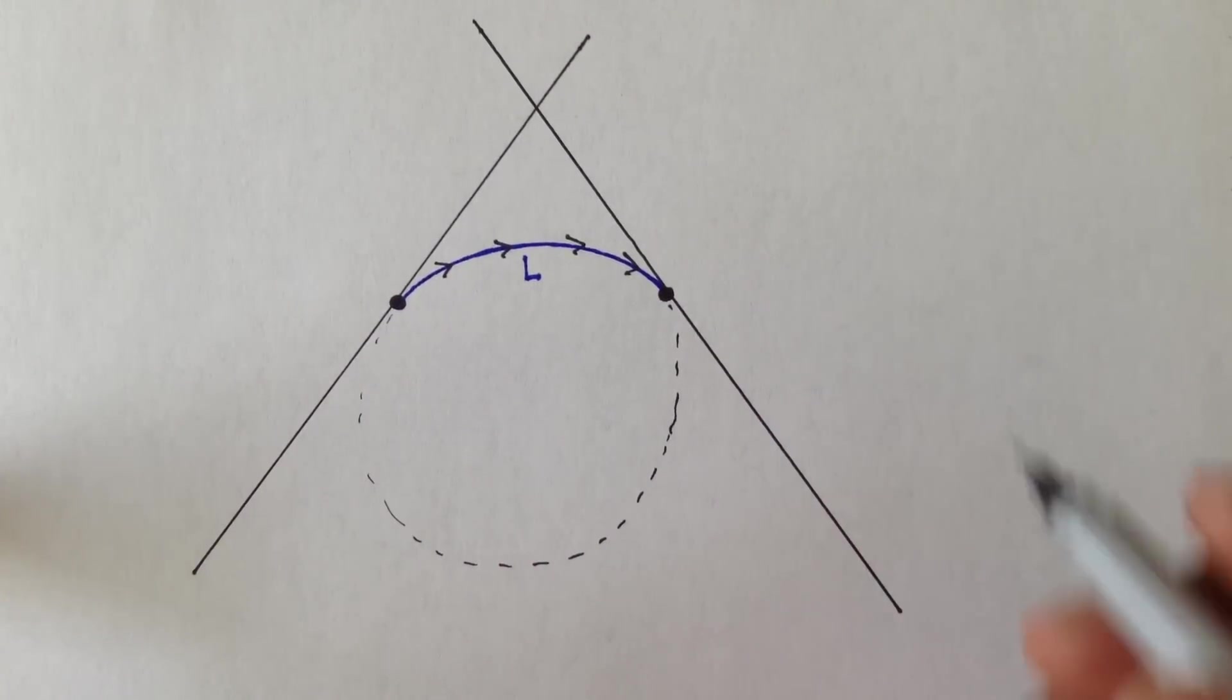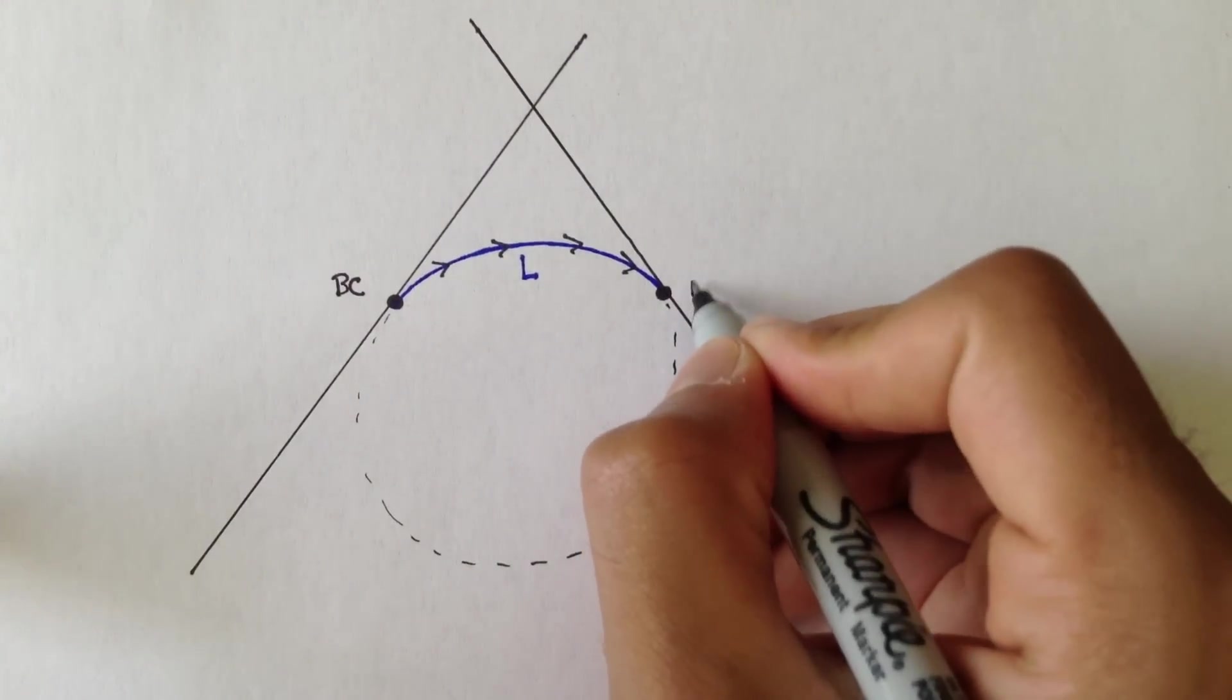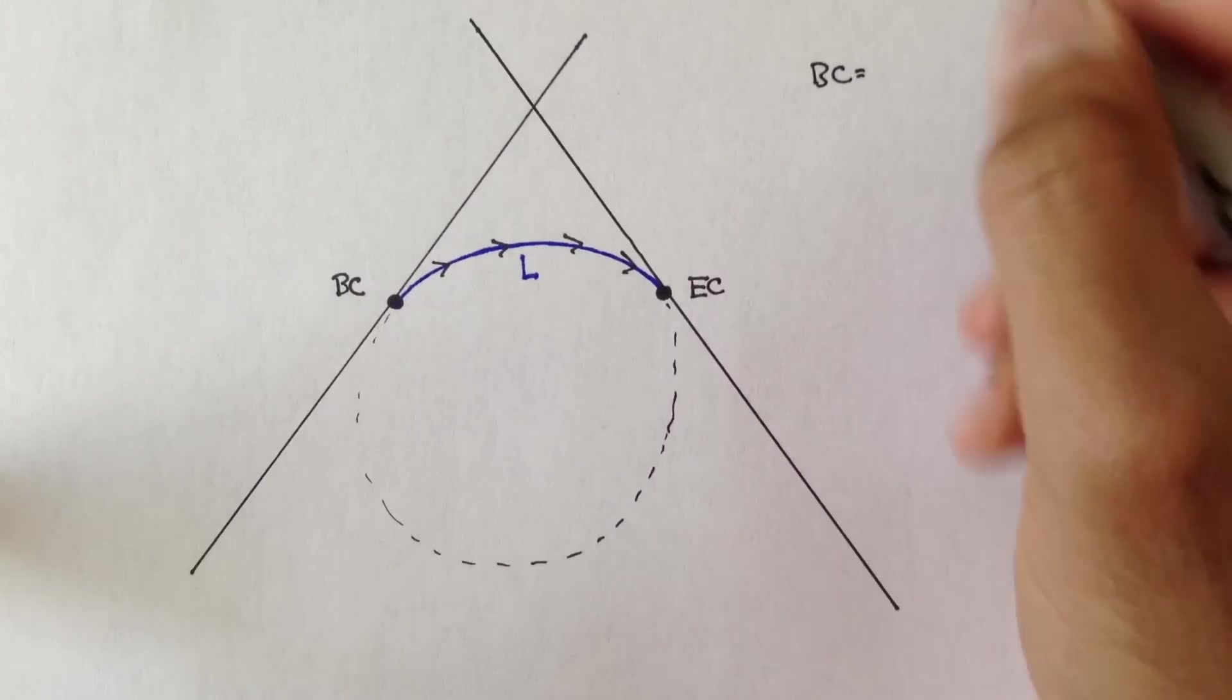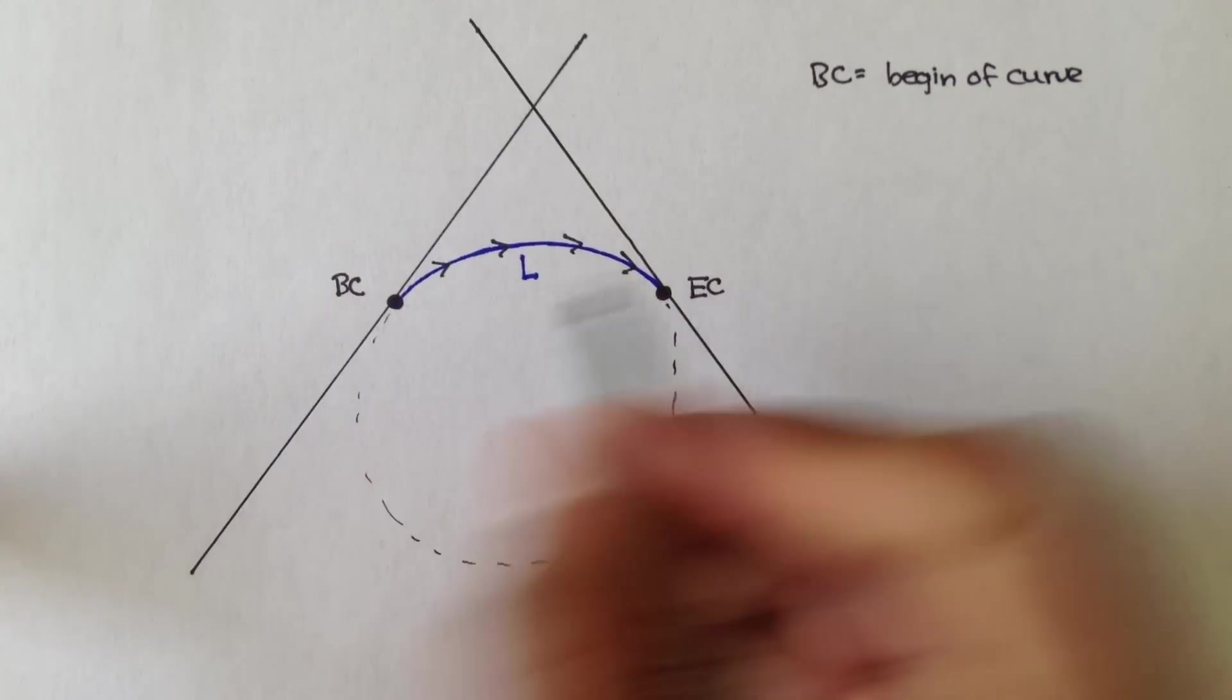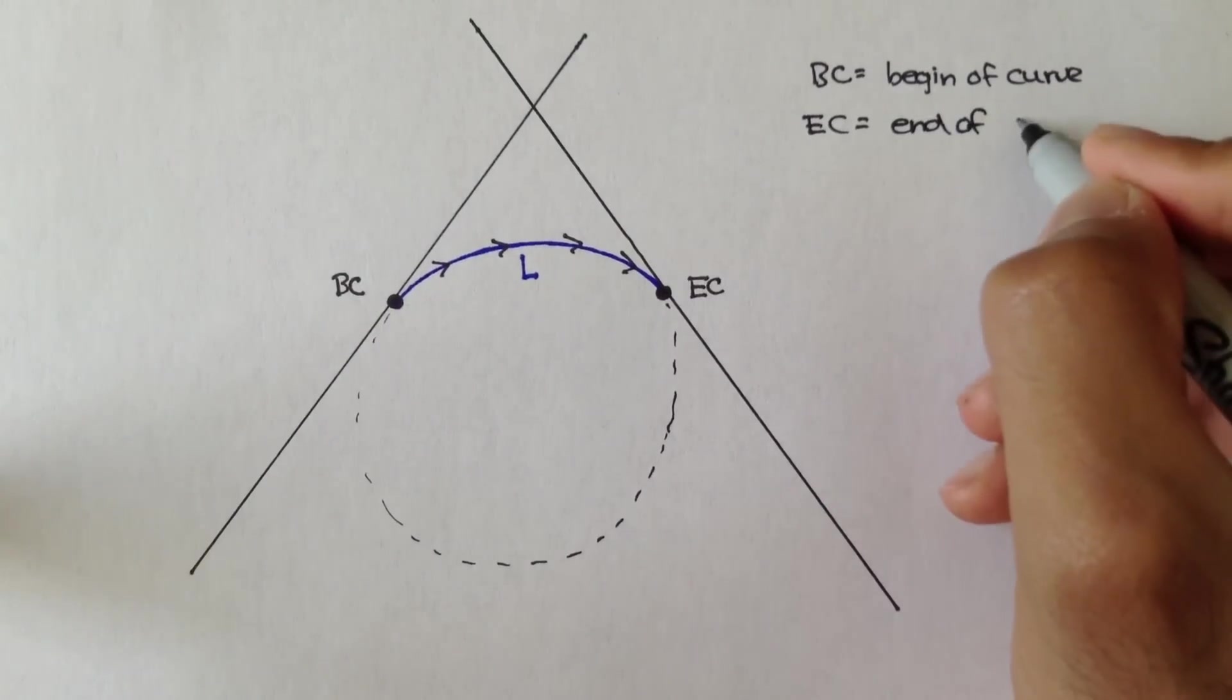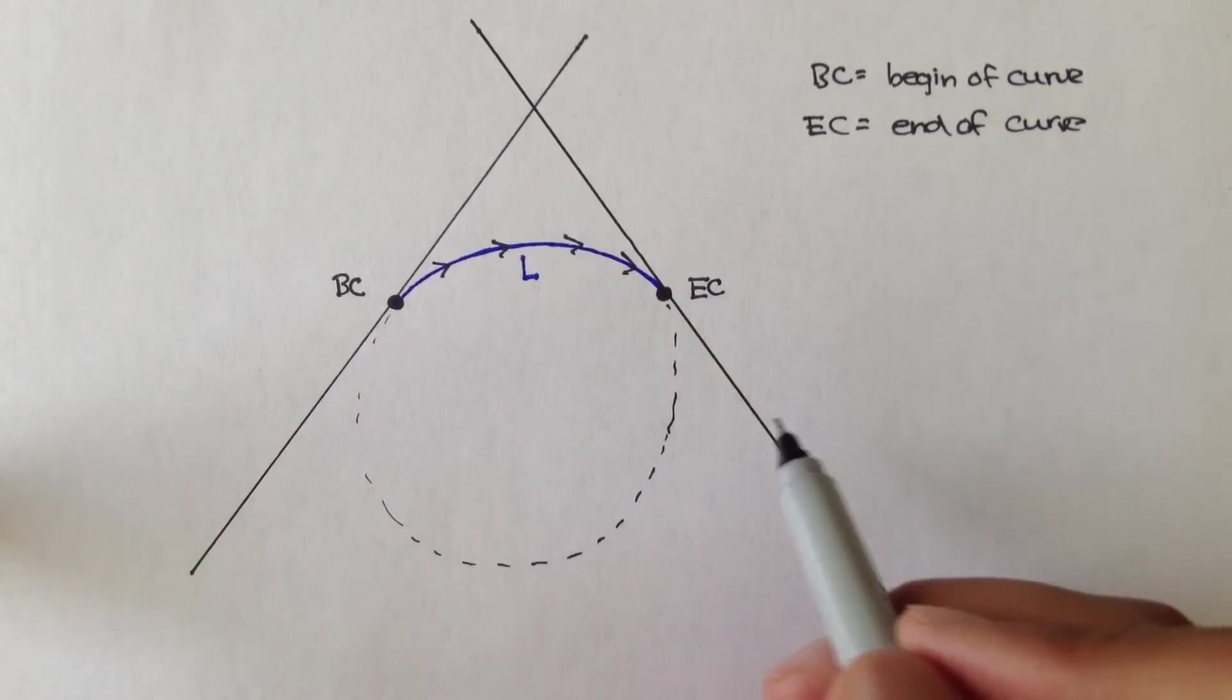Where the curve starts, let's label that BC. And where the curve ends, let's label it EC. Now, BC all that stands for is the beginning of curve, where the curve starts. EC stands for end of curve, where the curve ends. And these two lines are tangent to those two points.